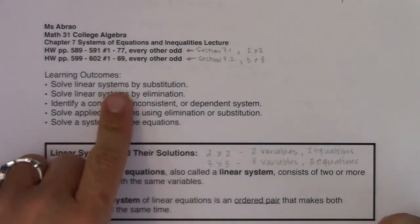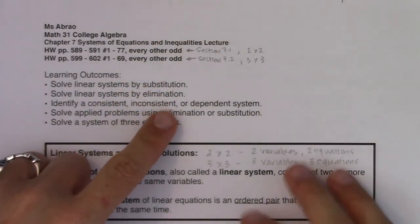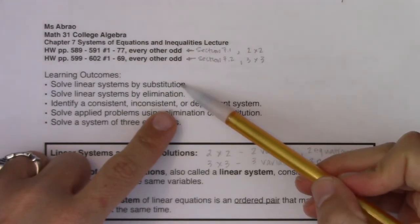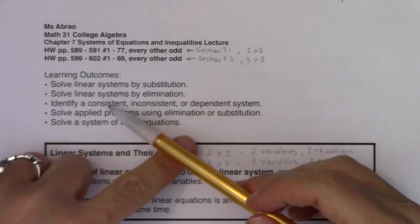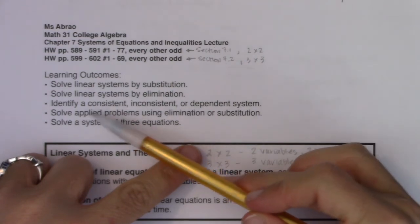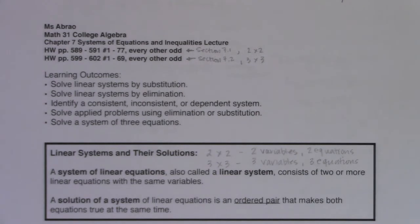That finishes everything we're covering in Chapter 7. We've discussed solving linear systems with substitution and elimination — any system can be solved either way, you just pick your preference. We covered consistent, inconsistent, and dependent systems, solved word problems, and extended into three-by-three systems. Next we'll go a little out of order and head into Chapter 9. See you there — thanks!